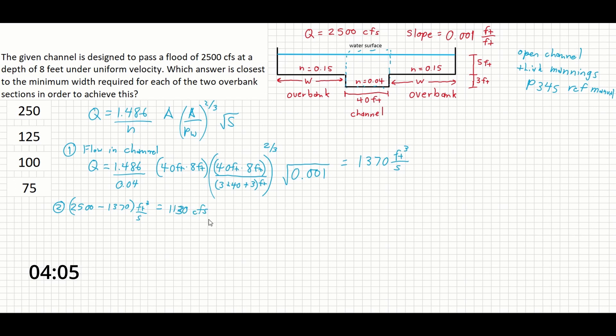Now because there's 2 overbanks, we're going to need to solve for one of the widths. But really what we're saying is, now because there's 2 overbanks, this really means that each one needs to handle half of the flow.